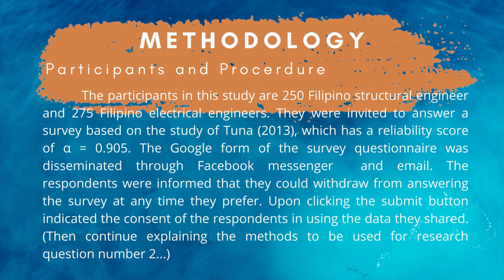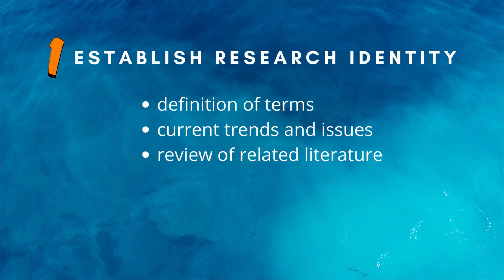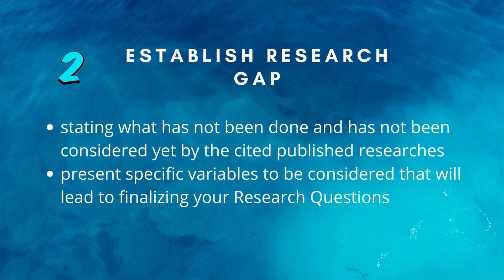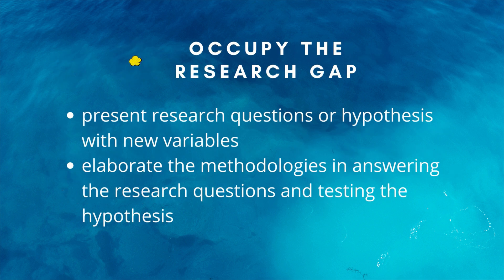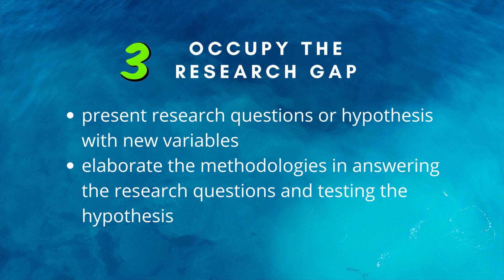Remember, the three rhetorical moves in the introduction are: Move 1 — Establish research identity: provide definition of terms, current trends and issues, and review of related literature. Move 2 — Establish research gap: state what has not been done and has not been considered yet by the cited published researchers, and present specific variables to be considered that will lead to finalizing your research questions. Move 3 — Occupy the research gap: present research questions or hypotheses with new variables, and elaborate the methodologies in answering the research questions and testing the hypothesis.